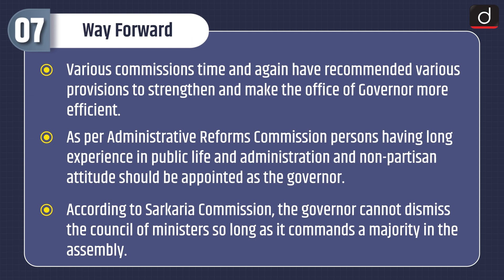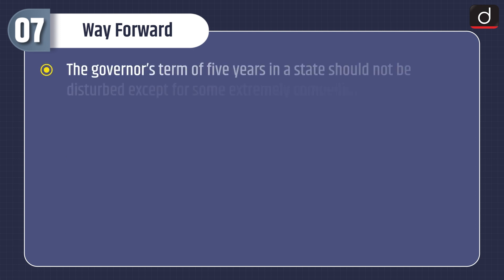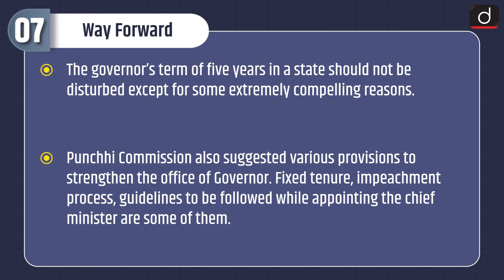As per the Administrative Reforms Commission, persons having long experience in public life and administration with a non-partisan attitude should be appointed as governor. According to the Sarkaria Commission, the governor cannot dismiss the council of ministers so long as it commands a majority in the assembly, and the governor's term of five years should not be disturbed except for extremely compelling reasons. The Punchi Commission also suggested provisions such as fixed tenure, impeachment process and guidelines to be followed while appointing the chief minister.